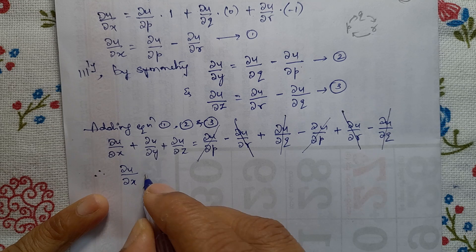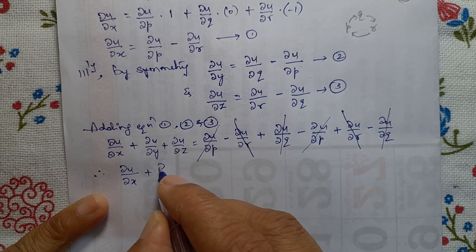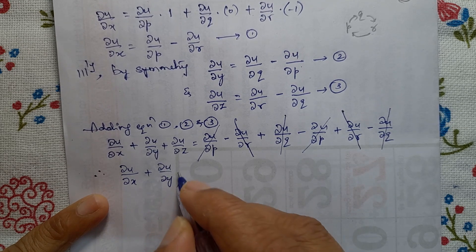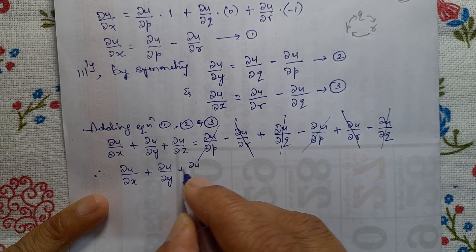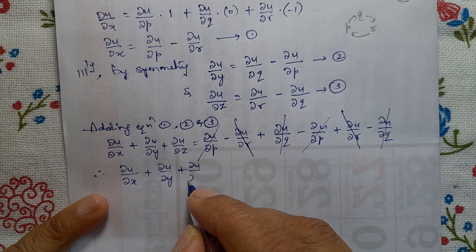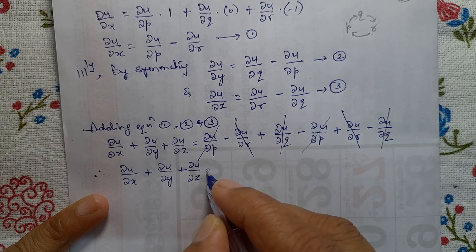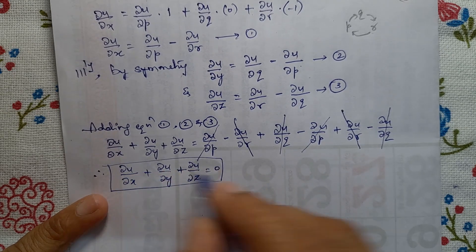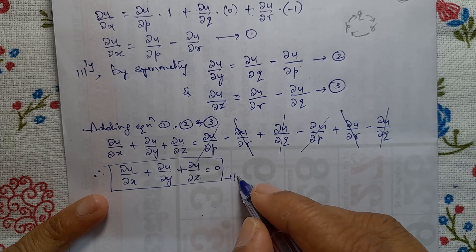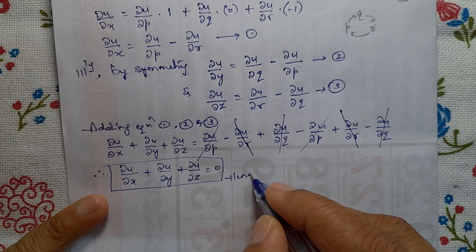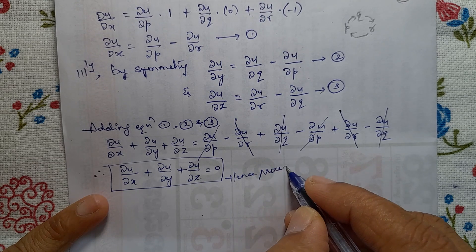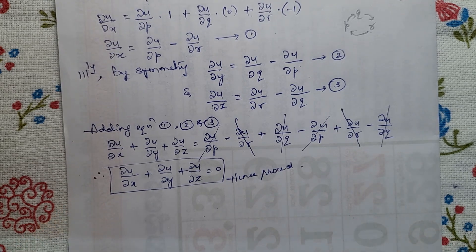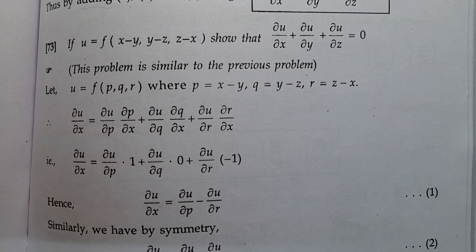Therefore, ∂u/∂x plus ∂u/∂y plus ∂u/∂z equals 0. Hence proved.